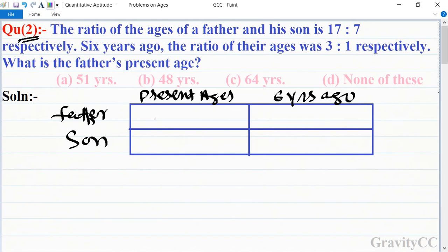So first we let the father's present age be 17x and his son's age is 7x. Six years ago his age is equal to 17x minus 6, and the son's age 7x minus 6.